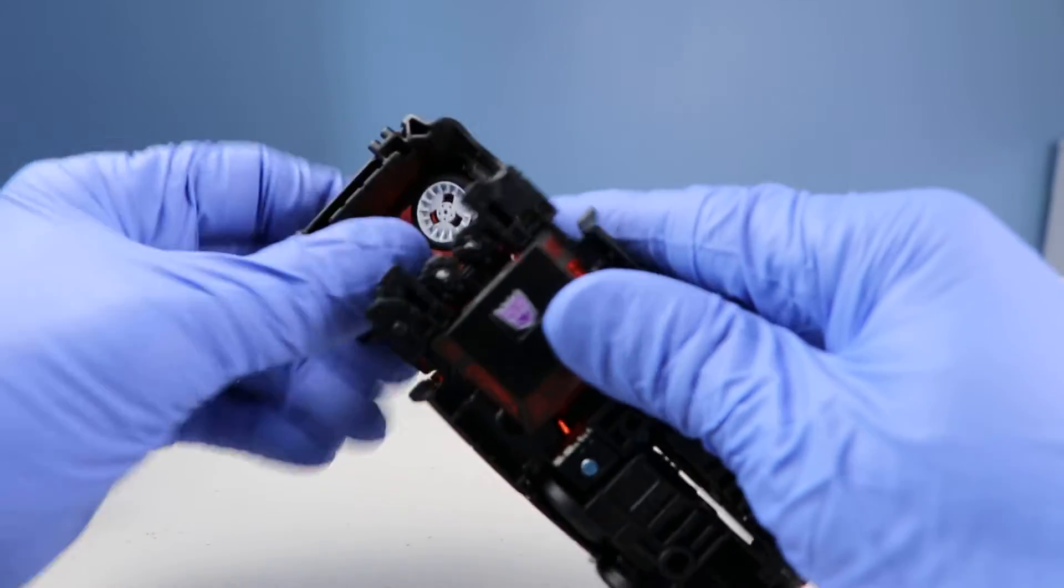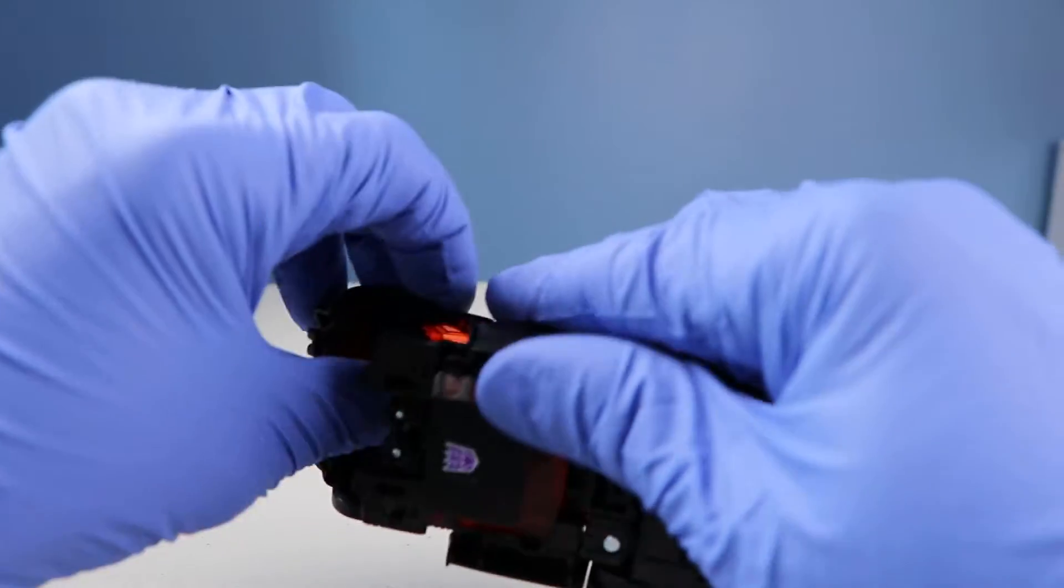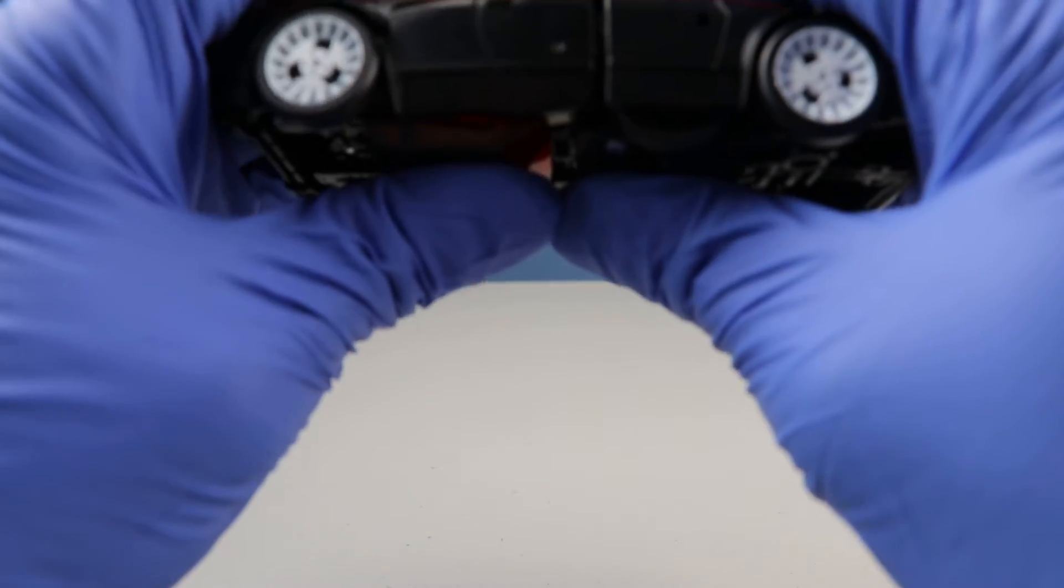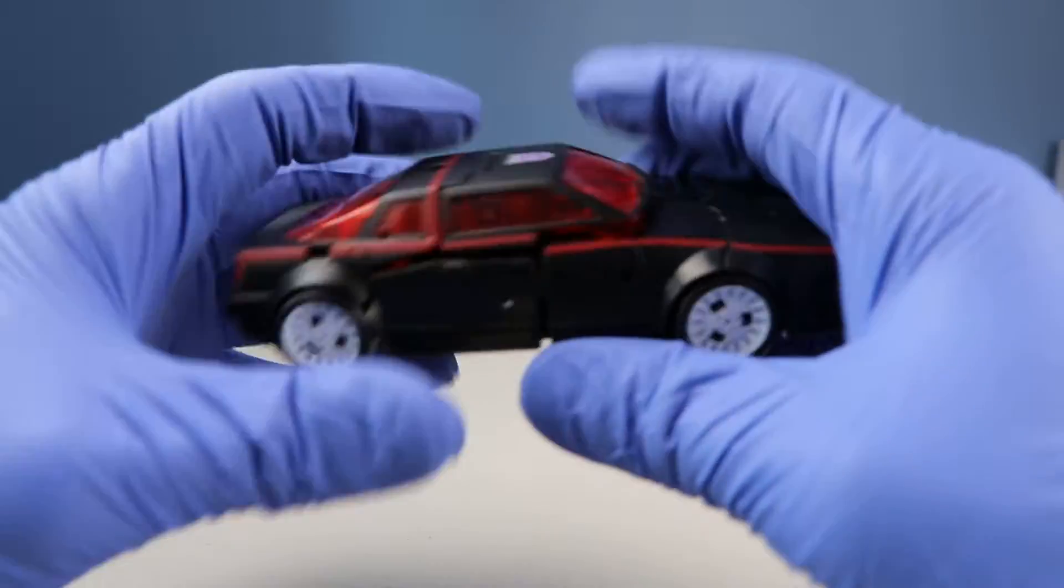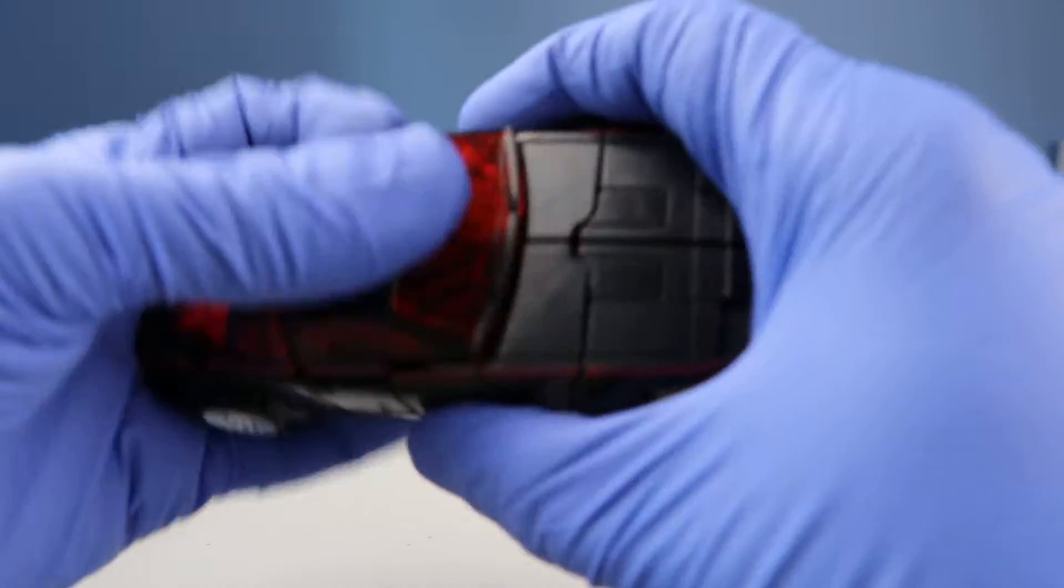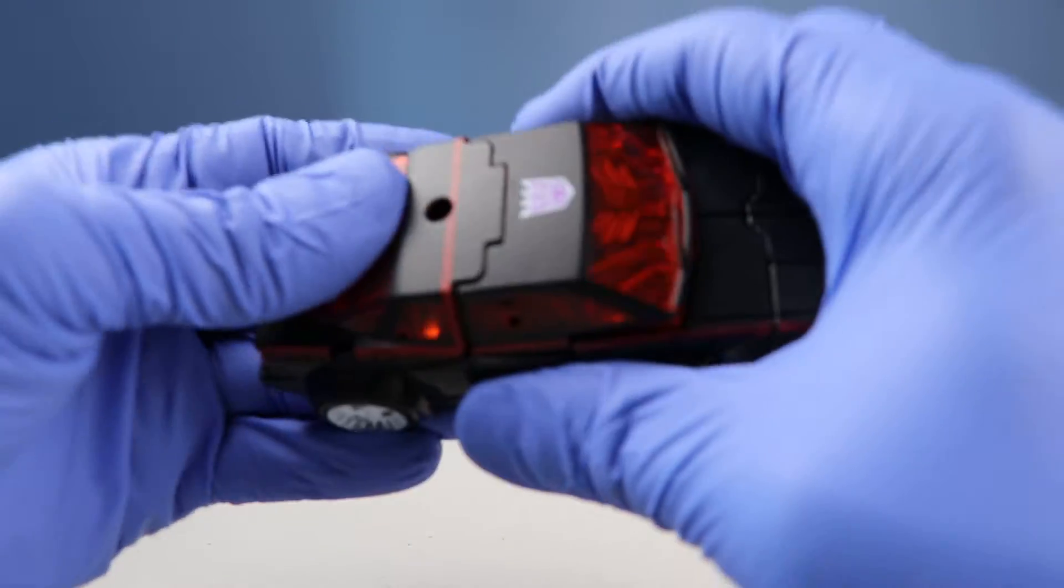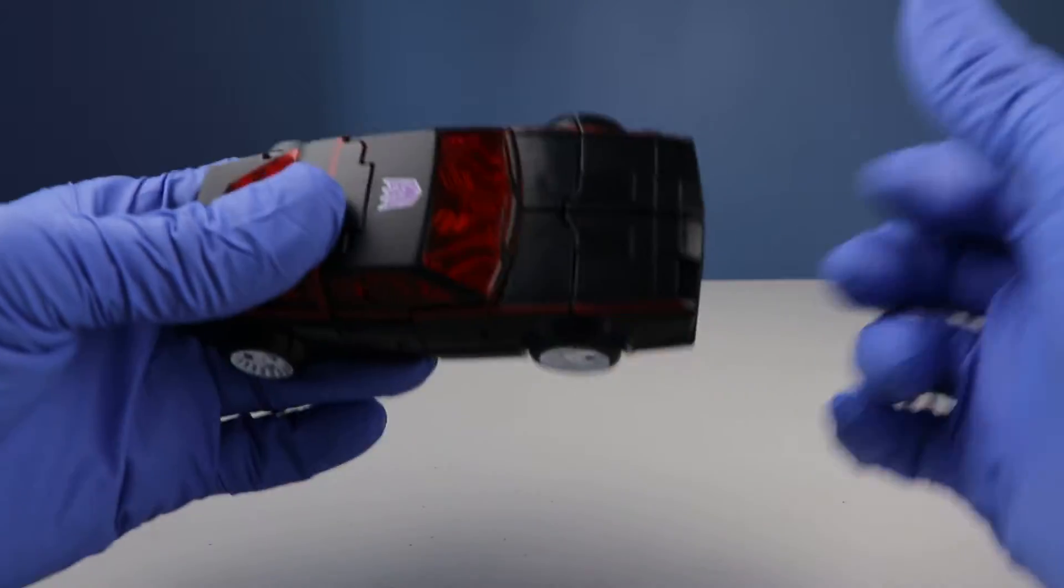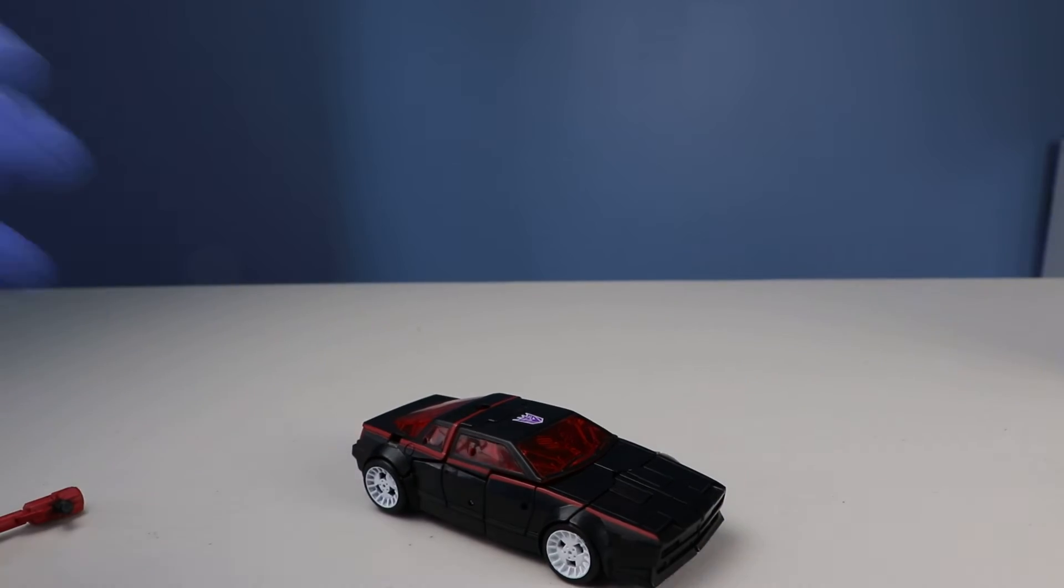And then for the back, flip out the back wheels. And then this all collapses, closing down the car. Just tab everything in, pushing it in. And there is Runabout in car mode.